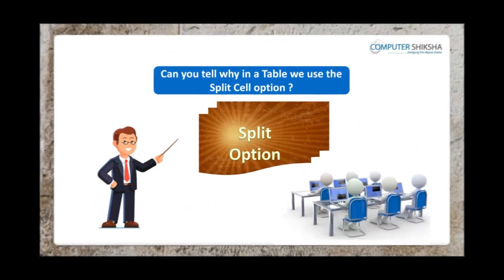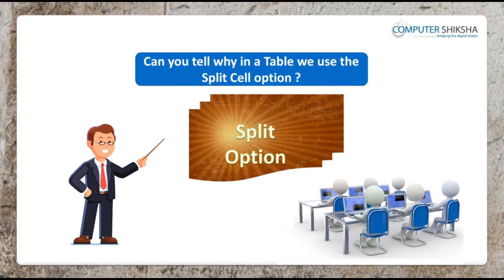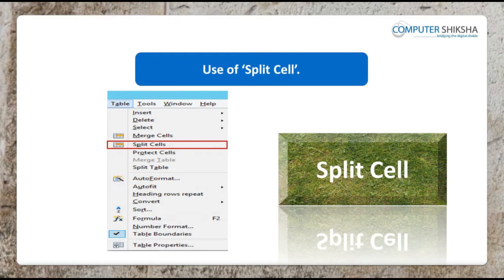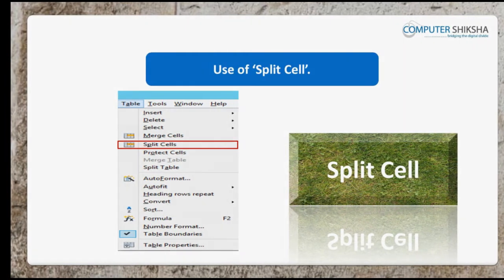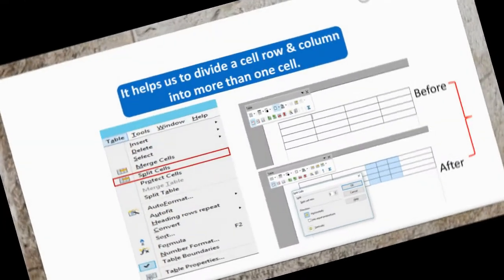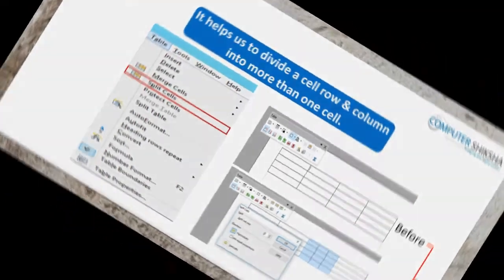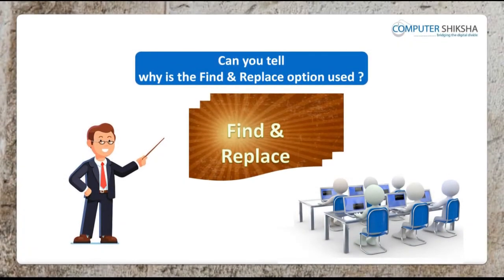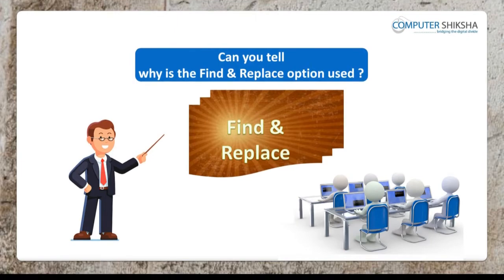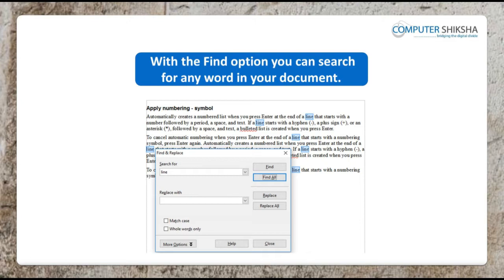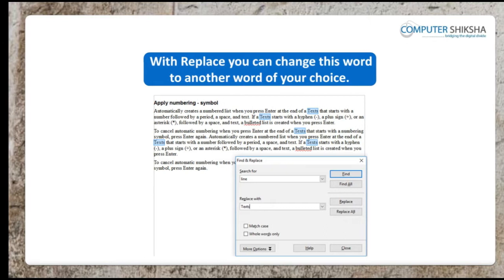Can you tell why in a table we use the split cell option? In a table, you make use of the split cell option to divide a cell, row or column into more than one part. Can you tell why are the find and replace options used? With the find option, you can search for any word in your document. With replace, you can change this word to another word of your choice.